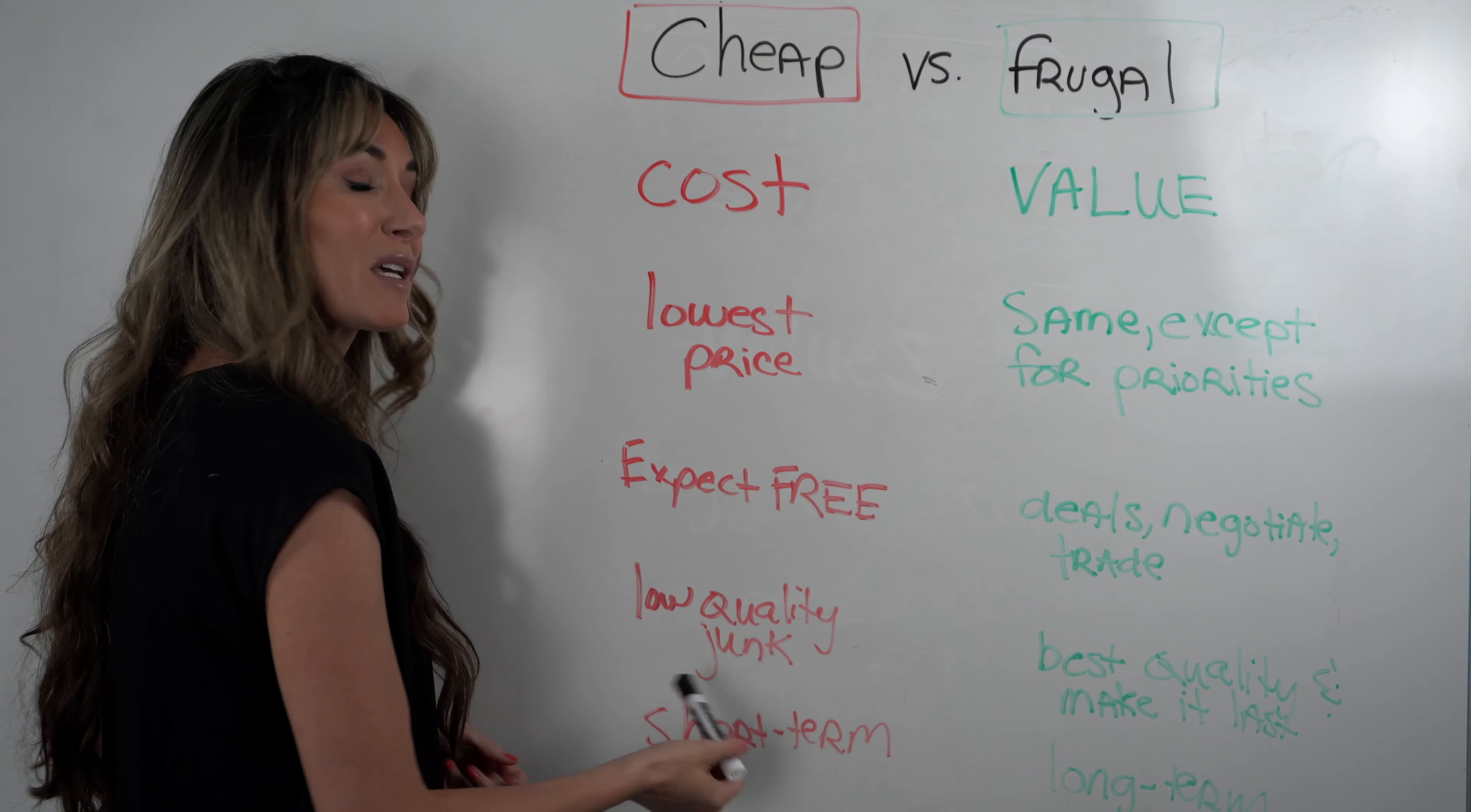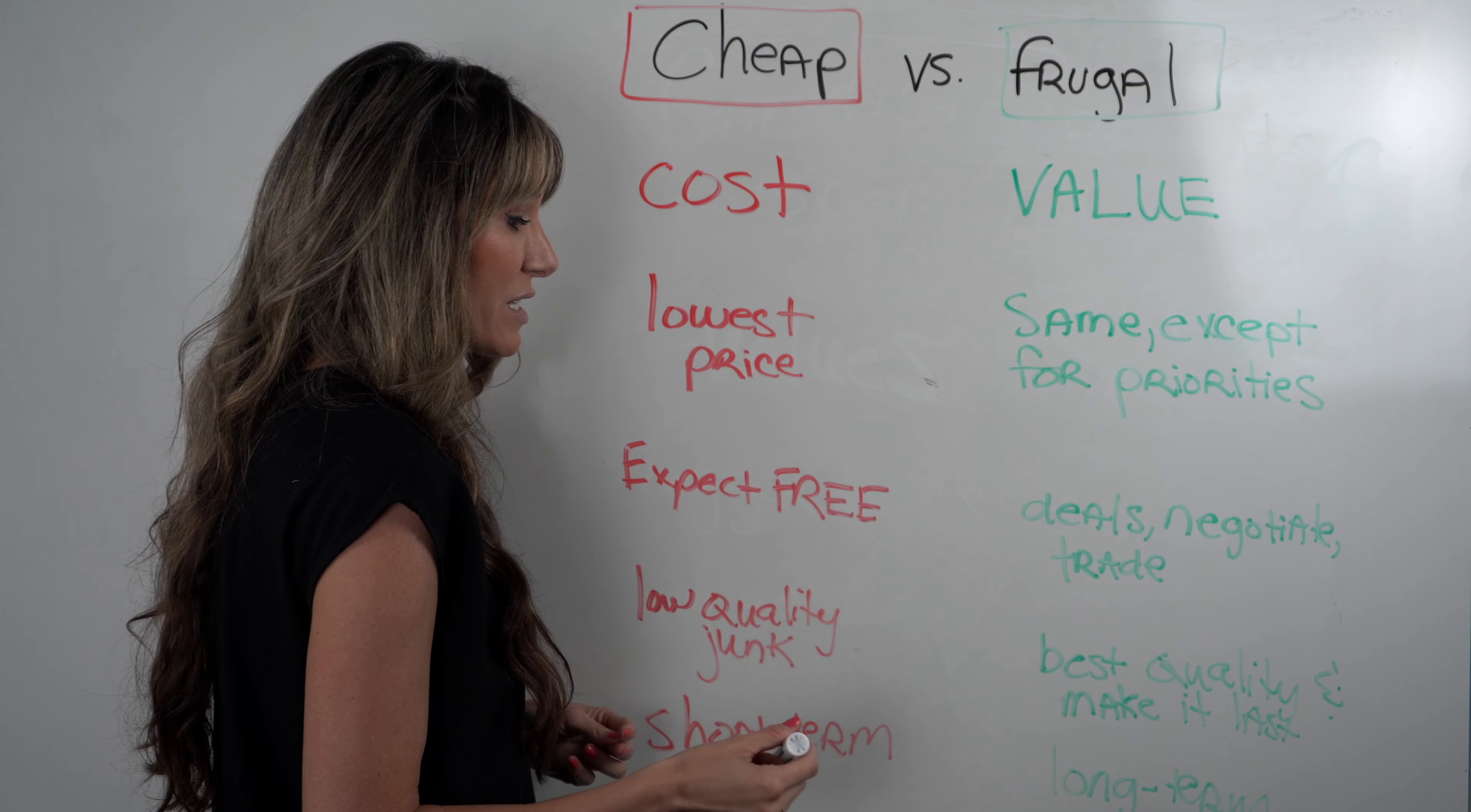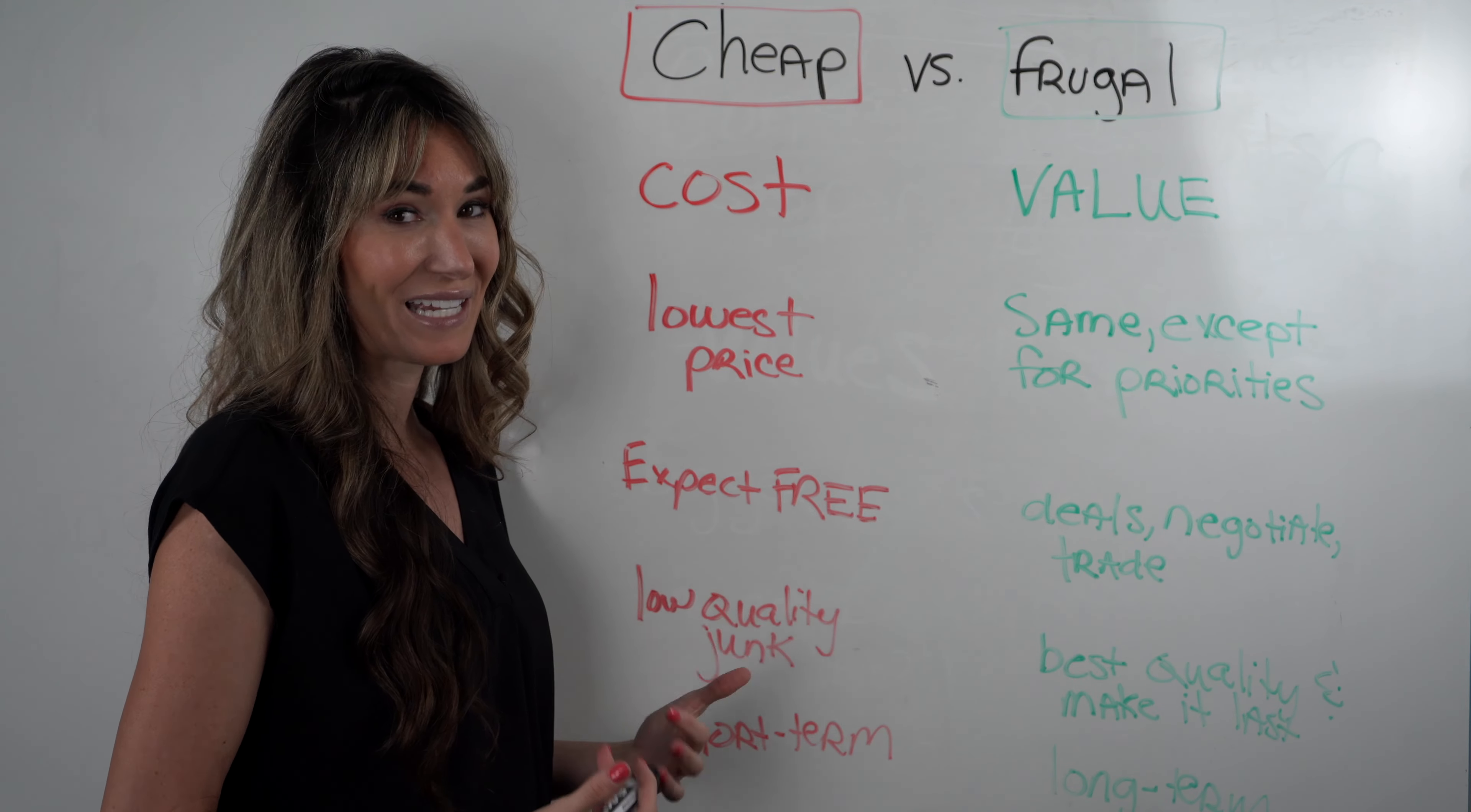And lastly, cheap people think short-term. They buy cheap crap. They want the lowest cost and they just look sort of, can be sort of embarrassing for the people around them because all they care about is saving the most amount of money. Whereas people that are frugal, they care about the long-term. They have a vision for their life and they're willing to prioritize and be okay with being frugal now so they can enjoy the massive rewards later.